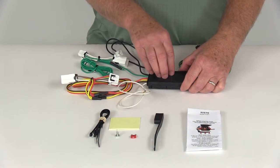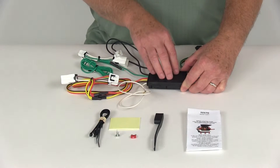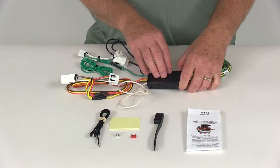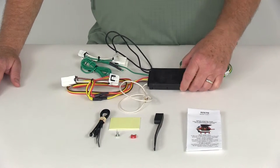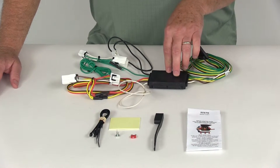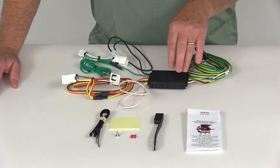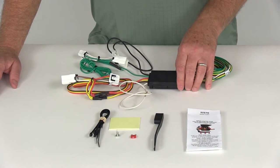Now this harness does include this taillight converter and this is to ensure that your vehicle's wiring will match that of your trailer. This converter is constructed using SMT technology, which is surface mount technology. This will give you consistent reliable performance, it even maximizes your trailer light yield and intensity and produces minimal heat. Also gives you superior operation in any rough road conditions.